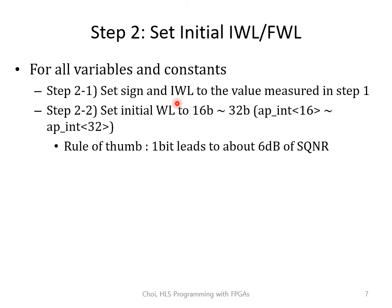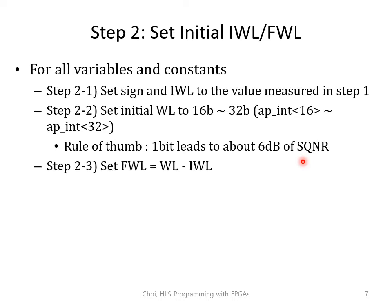Next, set the initial word length to about 16 to 32 bits. The length depends on the error rate you're aiming for. The rule of thumb is that 1 bit leads to about 6 decibels of SQNR. But keep in mind that having 16 bits doesn't necessarily mean you can achieve 96 decibels — the actual number can be much less if fixed-point optimization is not done carefully. Next, set the fractional word length to word length minus integer word length.